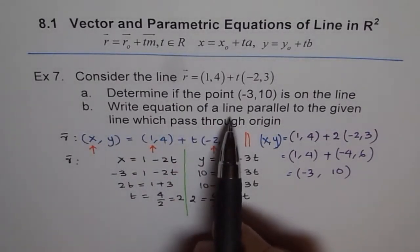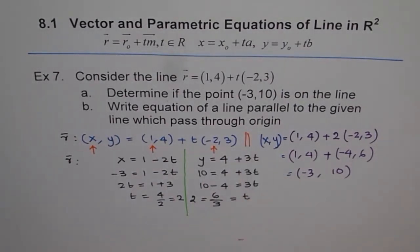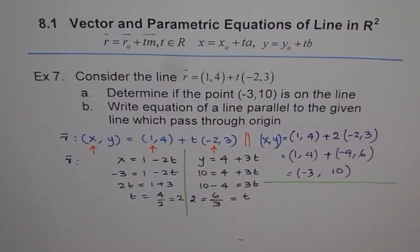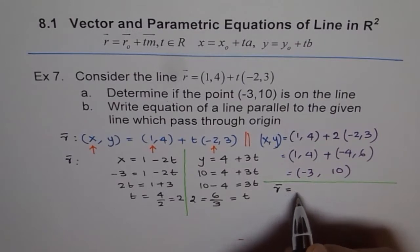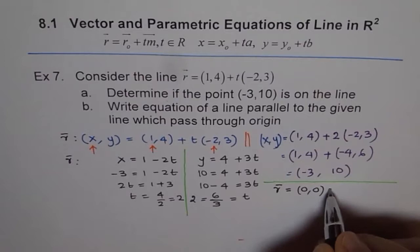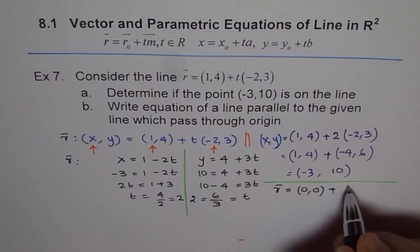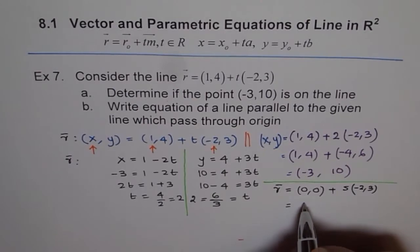Part B: write the equation of a line parallel to the given line which passes through the origin. If it passes through the origin, then (0,0) is on the line. So the equation can be written as R = (0,0) + S(-2,3), using S as the parameter. Parallel means the same direction numbers, so the direction vector remains (-2,3).